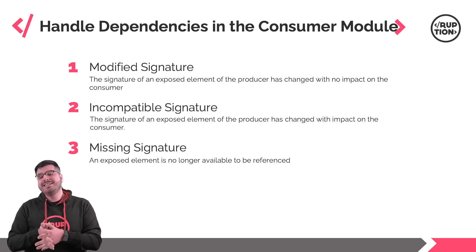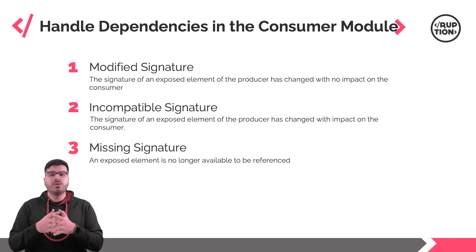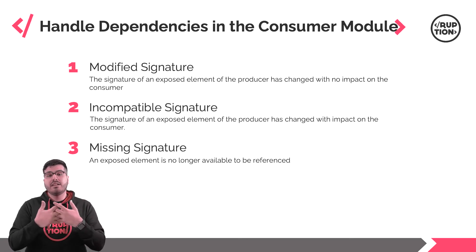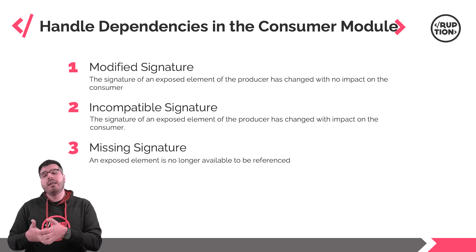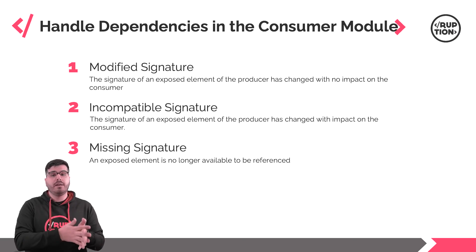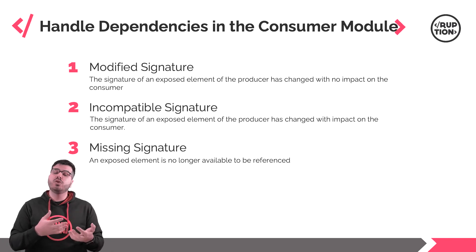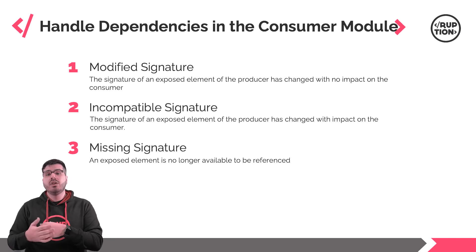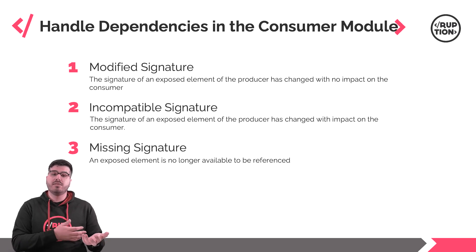And last but not least, the missing signature, which means an exposed element is no longer available to be referenced. This impacts the consumer. The impact is the same as the incompatible signature for both weak and strong dependencies. To fix this, we need to refresh the consumer by removing the element from the consumer logic and adapt its logic to no longer have this reference.